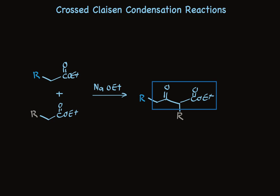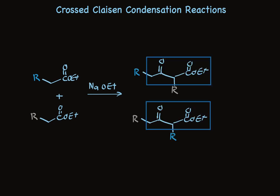But there's nothing that stops the top one from being the enolate, adding to the bottom one. So wait a minute. We should think about two products. And now you see that we have two different patterns for the substitution, where the blue substituent is and where the tan substituent is.